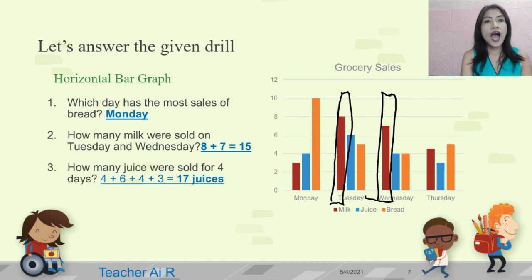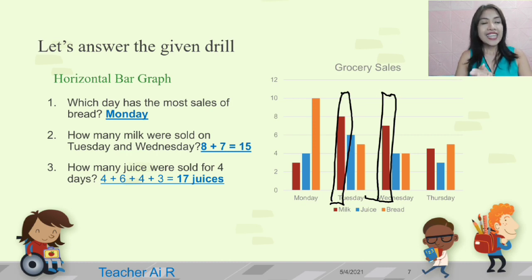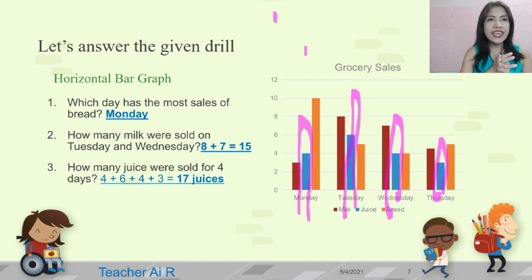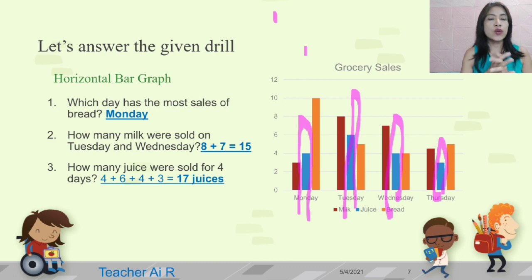The next question: how many juices were sold for four days? We're going to add the number of juices from Monday, Tuesday, Wednesday, and Thursday. On Monday it's four, on Tuesday it's six, on Wednesday it's four, and on Thursday it's three. When we add them together, it's 17 juices. That's the answer.